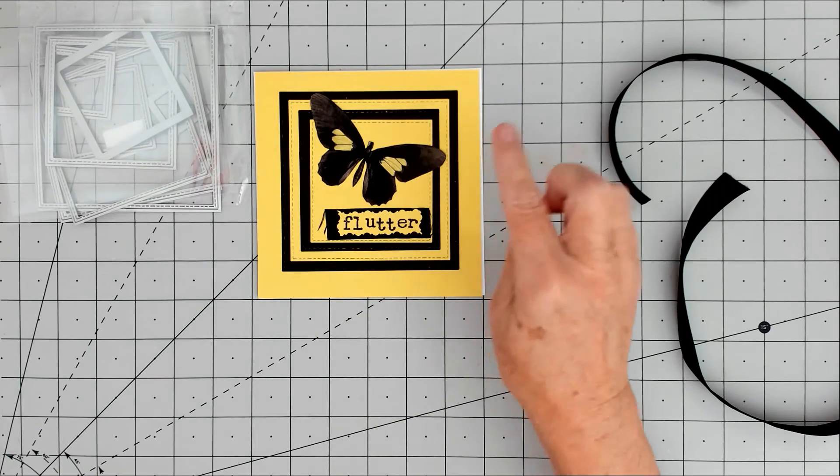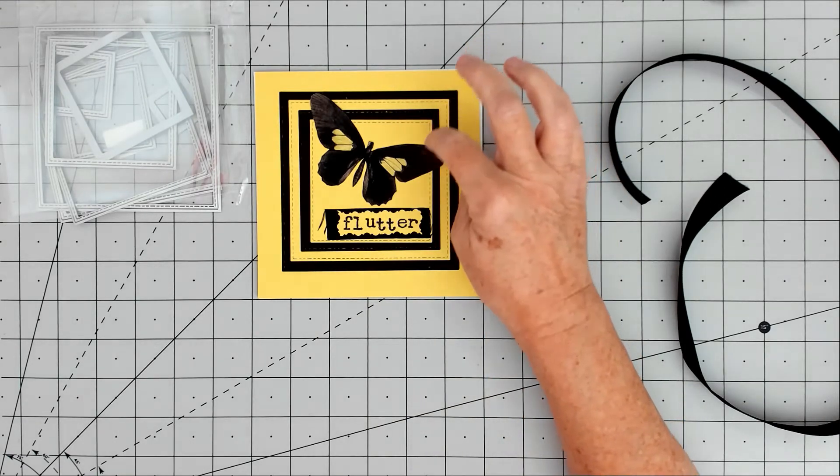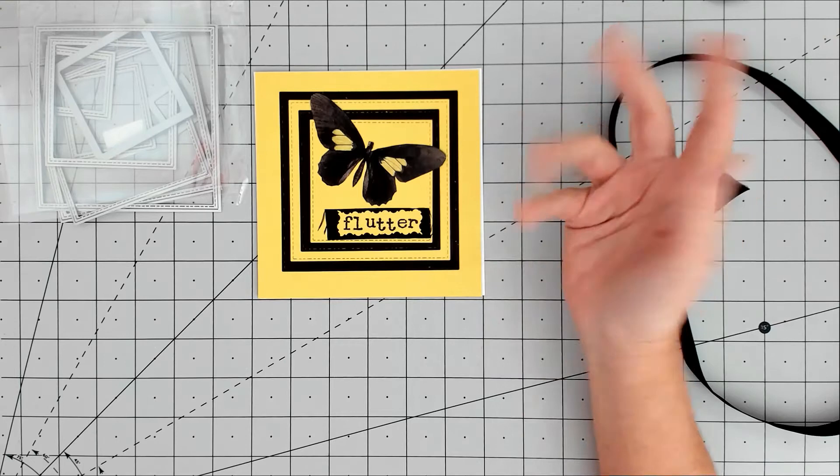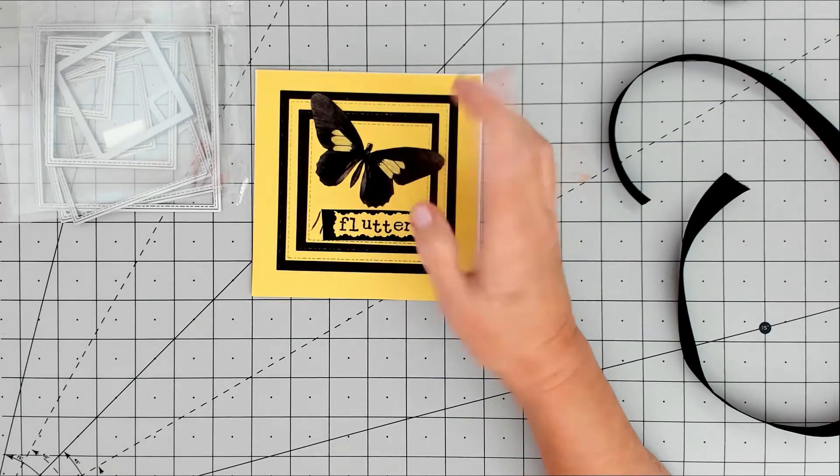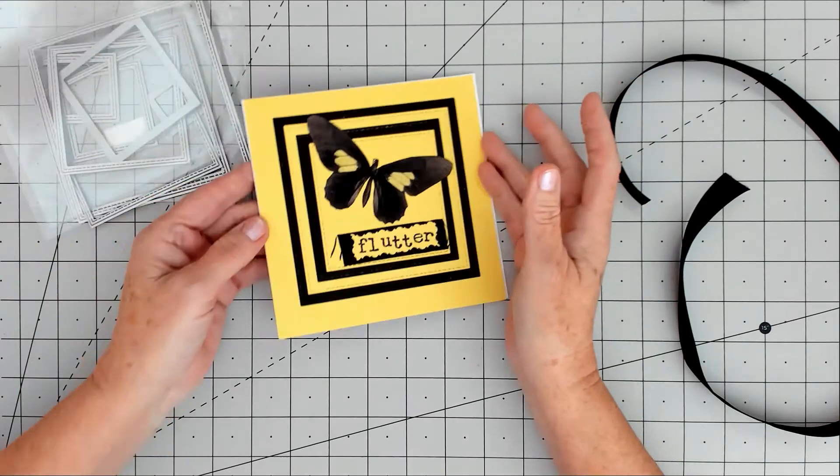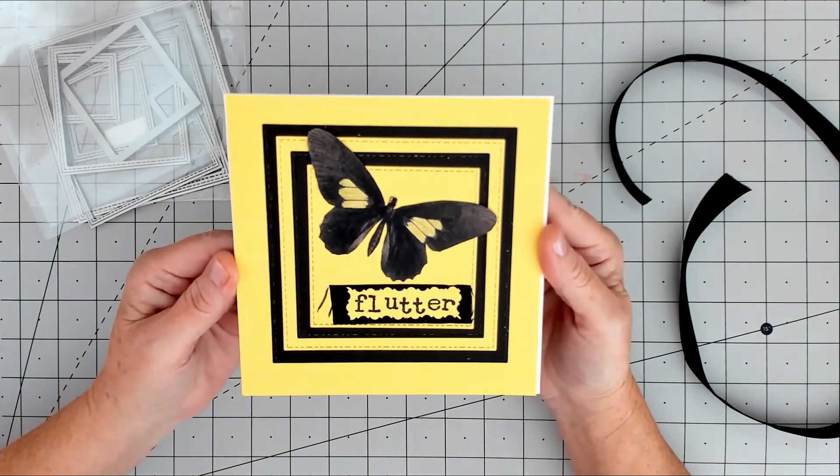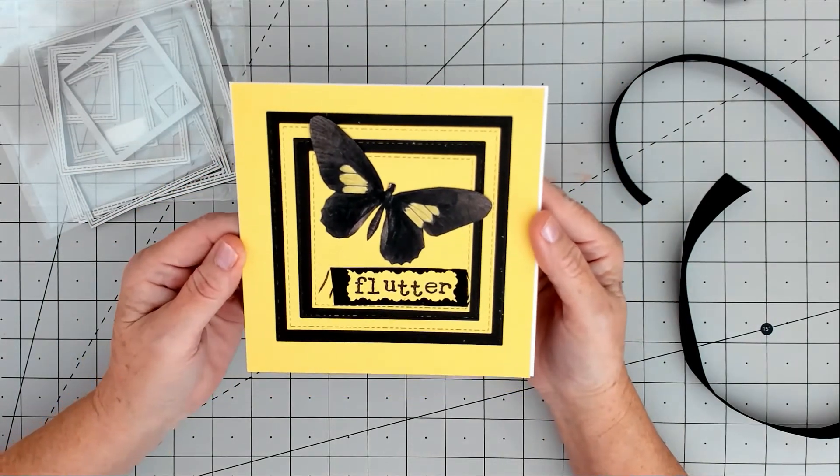So yellow, brown, and black. I did yellow, black, and then the butterfly is yellow, black, and brown, believe it or not, and ribbon, which was that bit, and then the dies. It's a little bit different to what I would normally make.